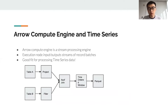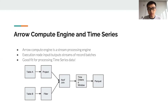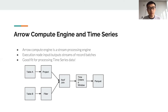Arrow Compute Engine is a stream processing engine centered around execution nodes. Each execution node takes a stream of record batches and outputs another stream of record batches. This execution model fits really well for processing time series data, and that's why we started this project. Here is an example of an execution graph in Arrow Compute — similar to any query graph in other systems — with nodes representing execution nodes and arrows representing the flow of record batches.